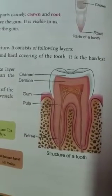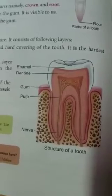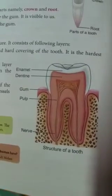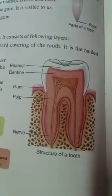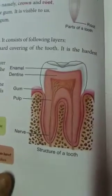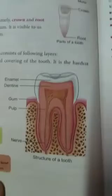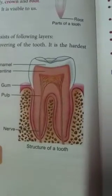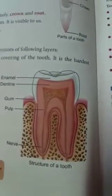Then we have molars. They are next to premolars. Molars are broader and flatter than premolars. They are meant for crushing and grinding the food. There are 6 molars in each jaw.